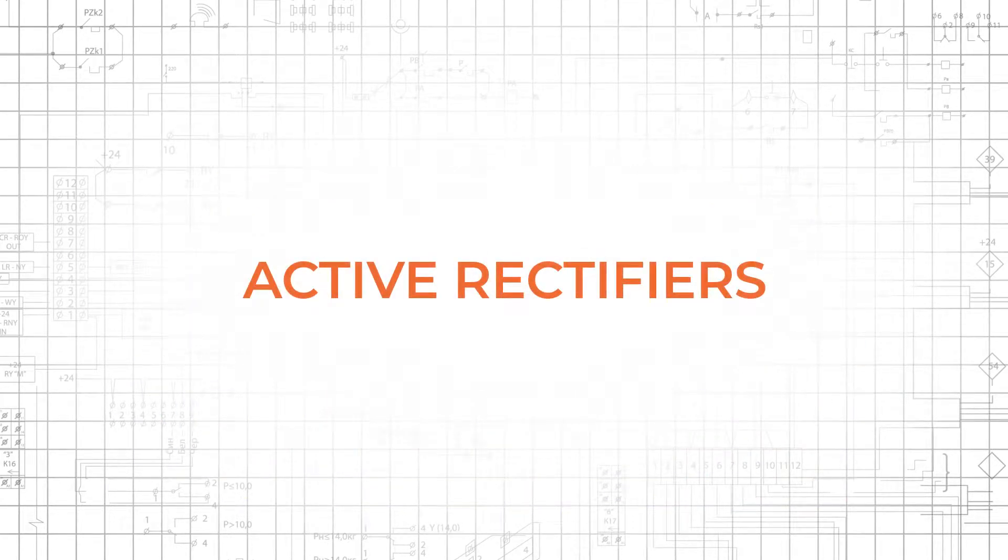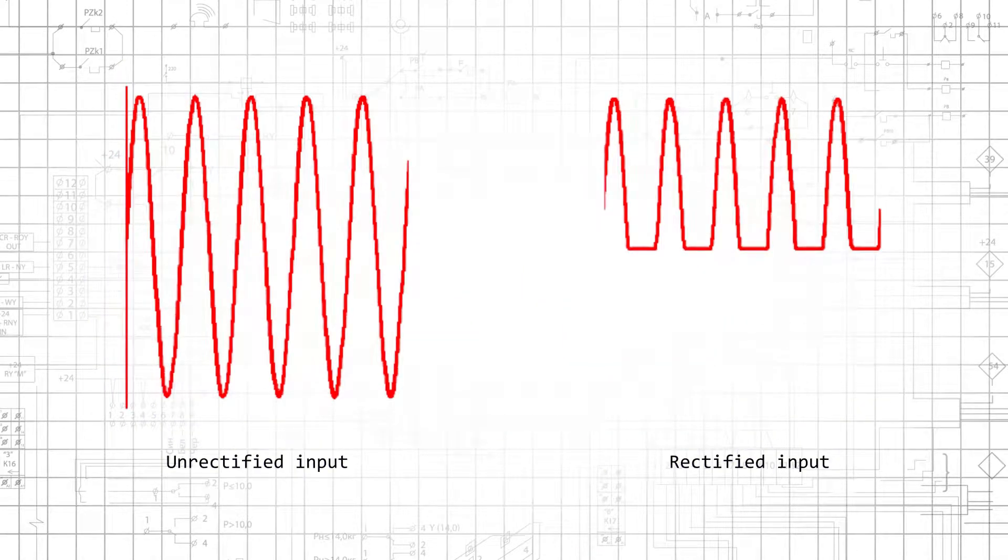Your rectifier ensures that current flows in only one direction, even when the source voltage would normally produce current that flows in both the positive and negative direction.